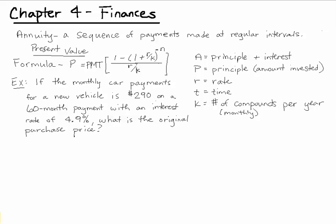The formula is similar but slightly different. This time I'm using P for present value. PMT is still the monthly car payment. R is the rate. K is the number of compounds per year and N is the number of payments that you make over the course of the annuity.